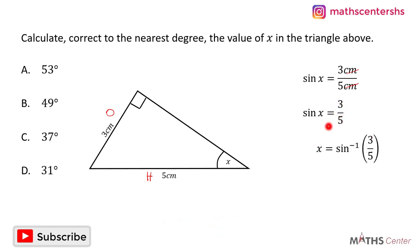To get x, we will have to find the sine inverse of 3 divided by 5. The sine inverse of 3 divided by 5 will give us 36.9 degrees. So x is equal to 36.9 degrees.